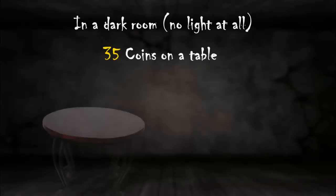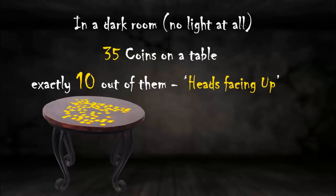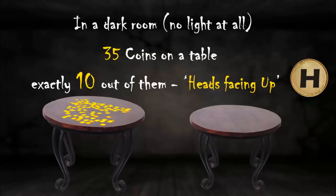In a dark room where there is no light at all, 35 coins are scattered on a table. Exactly 10 of them have heads facing up. There is one more table in the room.